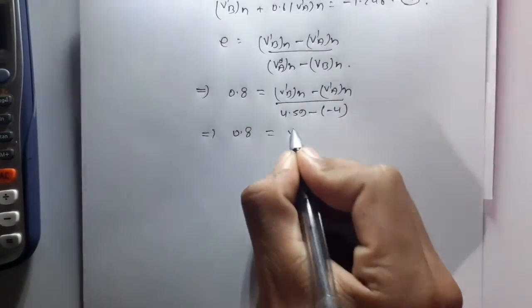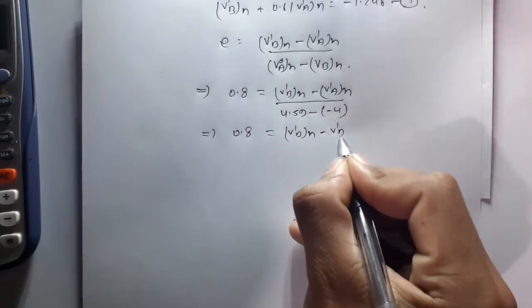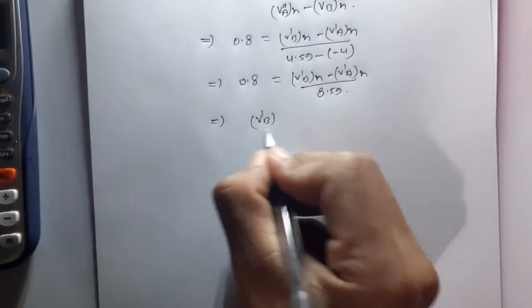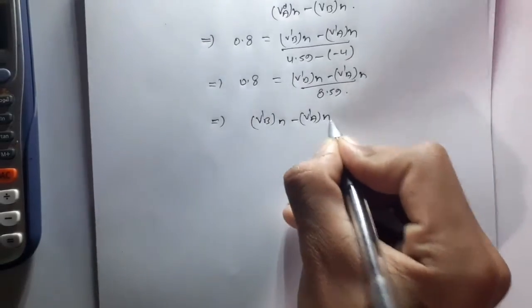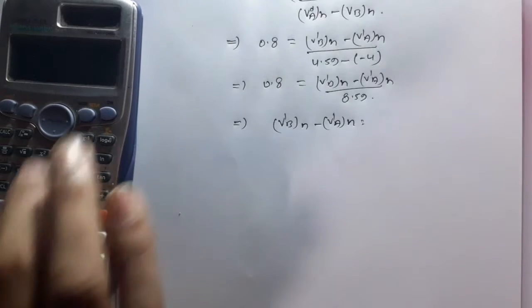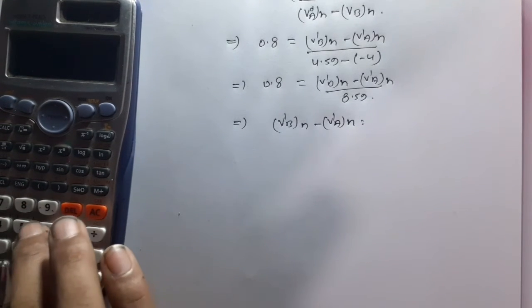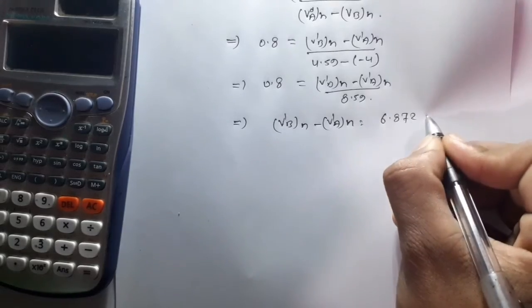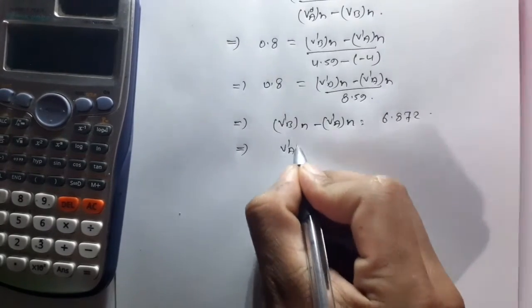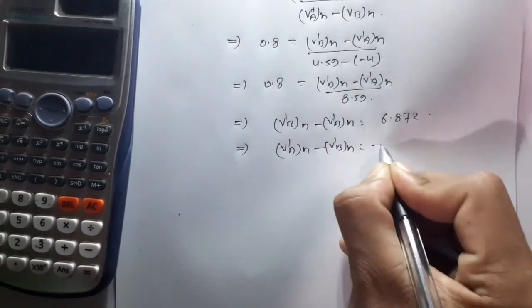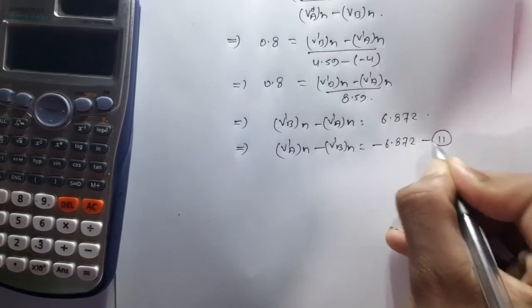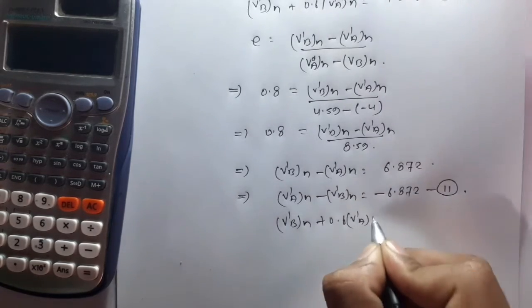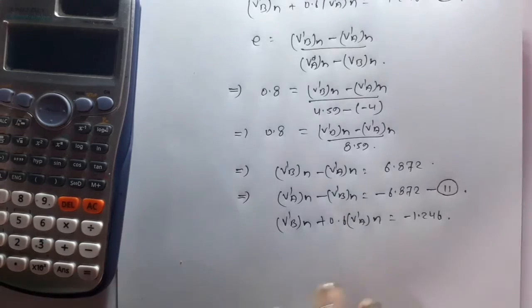This implies V'_BN − V'_AN = 0.8 × 8.59 = 6.872. Therefore V'_AN − V'_BN = minus 6.872. This is equation number 2. Equation number 1 is: V'_BN + 0.6·V'_AN = minus 1.246.